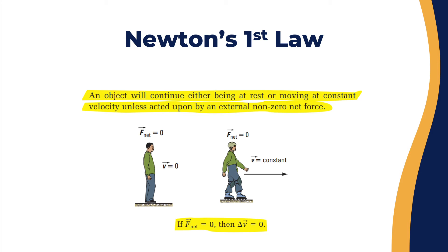Imagine a ball on a table — it will stay there unless someone moves it with a certain force, or the table is moved. The ball stays on the surface as long as no force affects it. And if you roll that ball on a frictionless, endless, smooth flat surface with no walls to hit, the ball will keep rolling forever until someone applies a force to stop it.